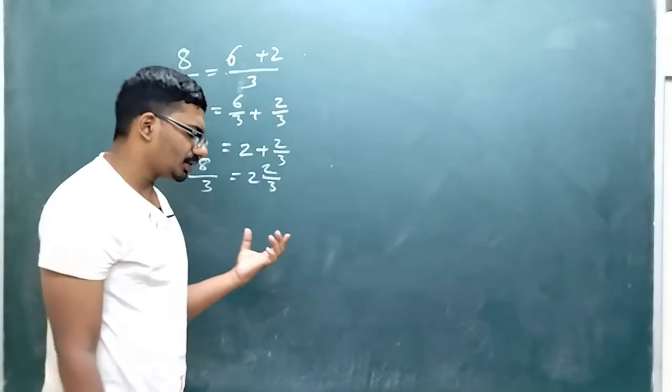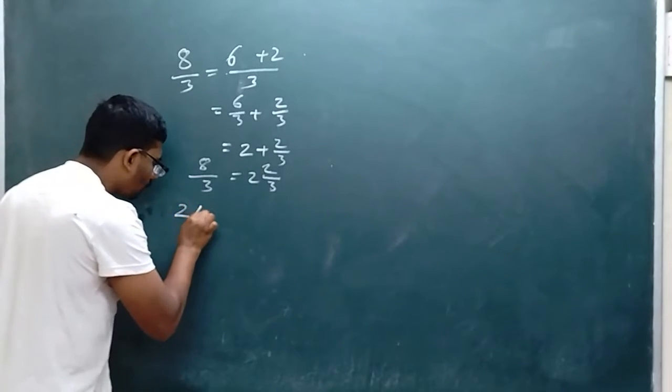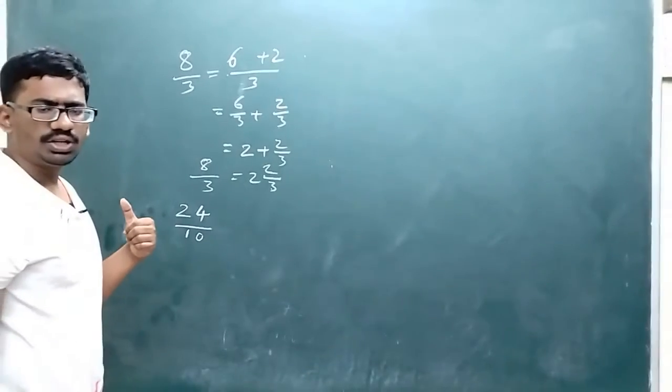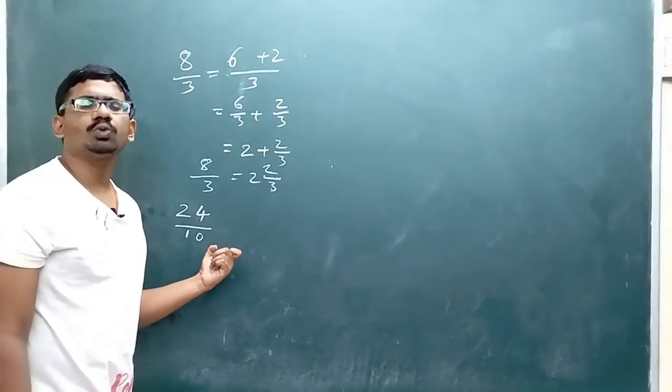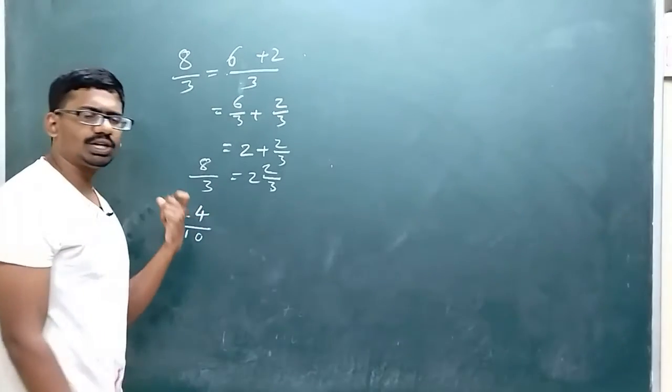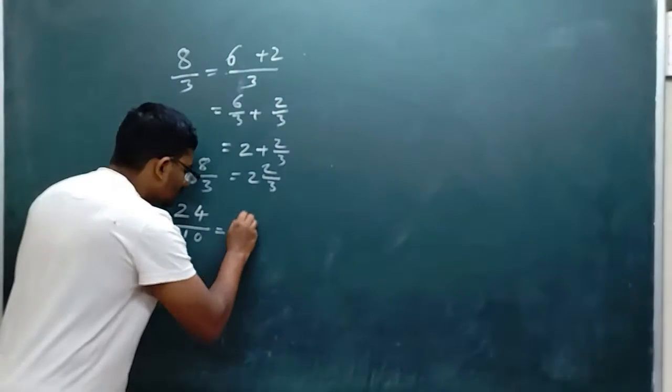Let us take a bigger number: 24/10. When you get a number like this, first you have to check whether it can be simplified. It can be simplified to 12/5.